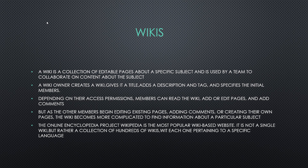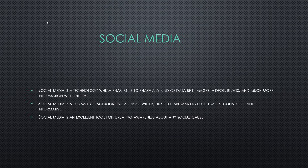Now we can study what is a wiki. A wiki is a collection of editable pages about a specific subject, used by a team to collaborate on content. It is a method for teams and groups to collaborate on writing projects, from brief articles to long reports and reference works. Depending on access permissions, members can read the wiki, add or edit pages, and add comments. As members begin editing existing pages, adding comments, or creating their own pages, the wiki becomes much more complex. The online encyclopedia Wikipedia is the most popular wiki-based website — it is not a single wiki but rather a collection of hundreds of wikis, each pertaining to a specific language.